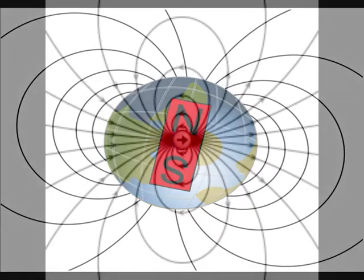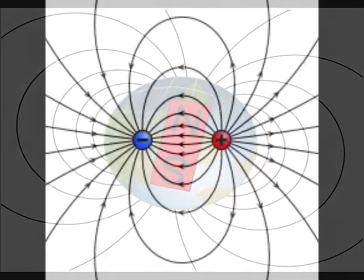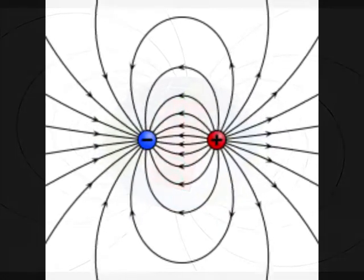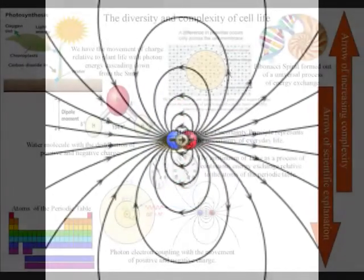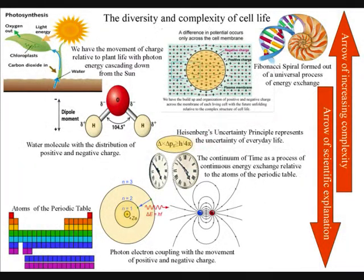In some ways the north and south poles of the earth can be thought of as the positive and negative of a dipole moment, with the future unfolding with the movement of positive and negative charge and continuous flow of electromagnetic fields.